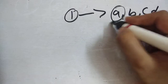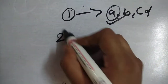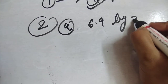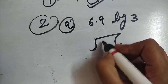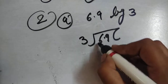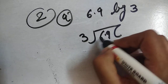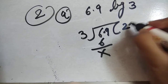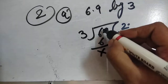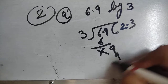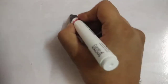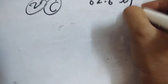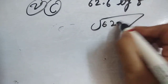In question number 2a, 6.9 is divided by 3. We first divide 6 — 3 twos are 6 — then put the dot here, and 3 threes are 9. So the answer is 2.3. In question number 2c, 62.6 is divided by 8.